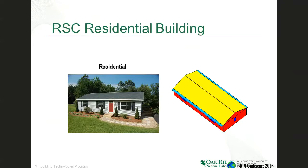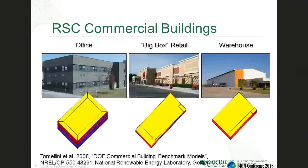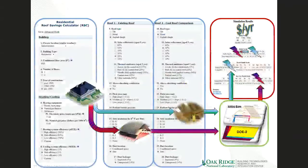You can click on residential or commercial for whichever building type you're most interested in. The residential building is modeled like a pretty typical home layout. In the commercial space, we support three building types: the medium office, which is where most people work; big box retail, where most people shop; and a warehouse where we store goods before they go to where we can buy them. These are the three commercial building types currently supported.